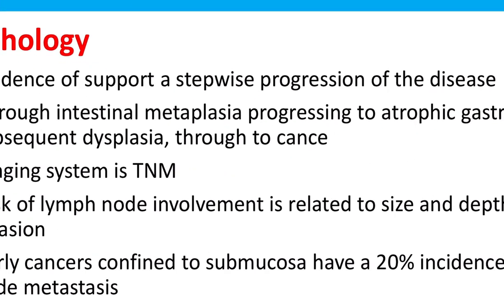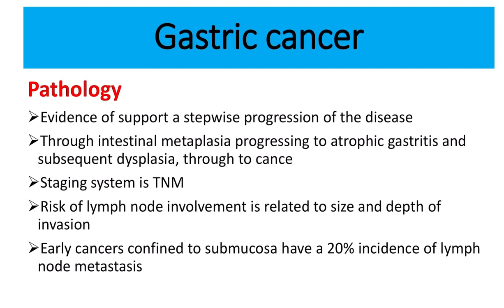Regarding pathology, there is an established progression of disease: first intestinal metaplasia develops — meaning cellular alteration — then dysplasia, and then cancer. So first intestinal metaplasia with increased cell number, then the cell morphology becomes distorted, then cancer development occurs.